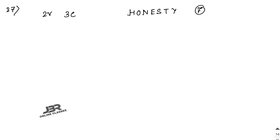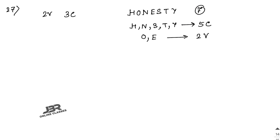We separate the consonants and vowels. Consonants are H, N, S, T, Y — total 5 consonants. Vowels are O and E — total 2 vowels. The word we need to form has 2 vowels and 3 consonants. Since there are exactly 2 vowels, that gives 2C2. For consonants we write 5C3.